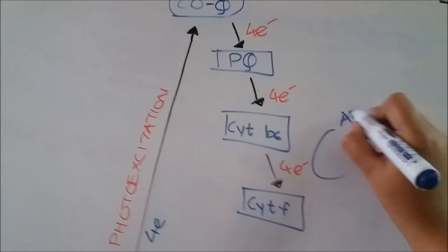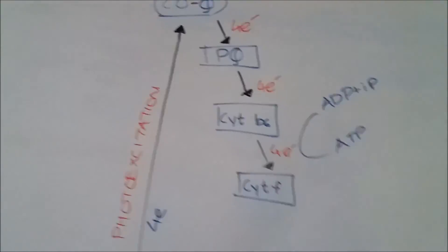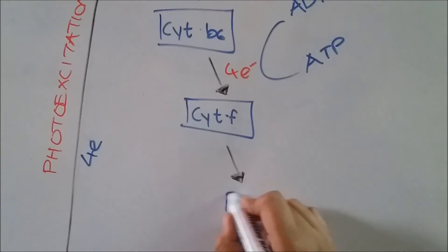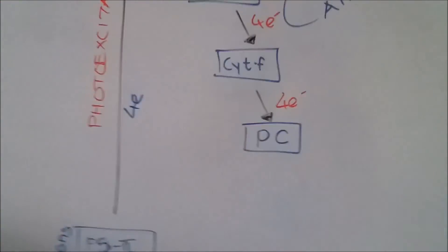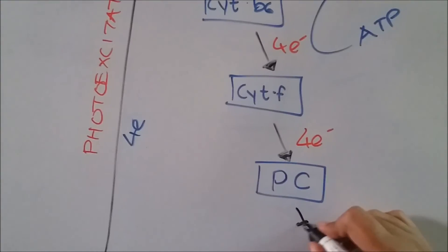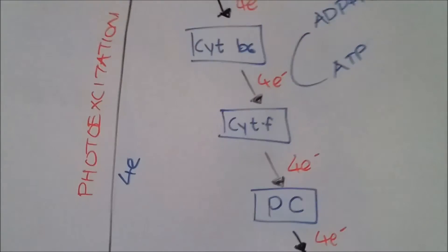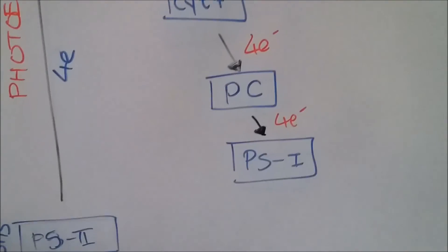Cytochrome f will transfer electrons to PC, plastocyanine. This plastocyanine will transfer the electrons to our PS1 center, which is photosystem 1 center or pigment system 1 center.